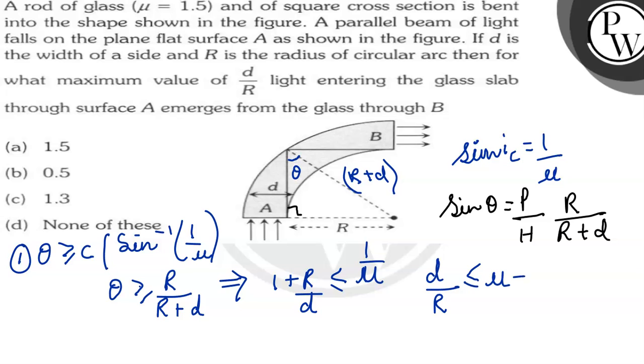So you can see here the maximum value of D upon R, the maximum value of D upon R should be less than or equal to mu minus 1. Mu we have 1.5 minus 1 which will be equal to 0.5. This is the answer.